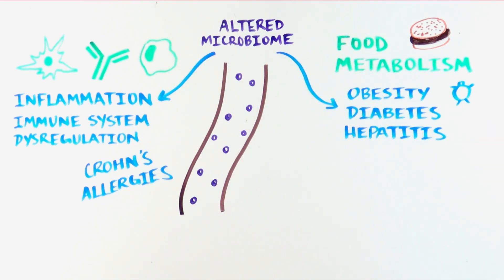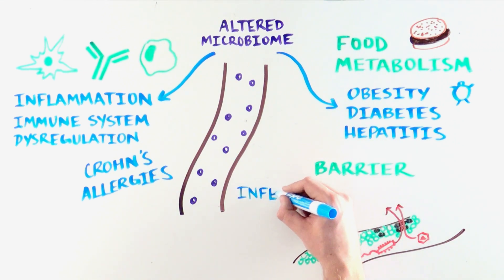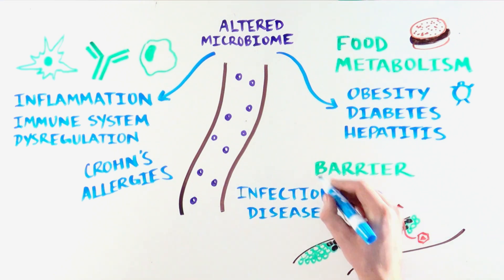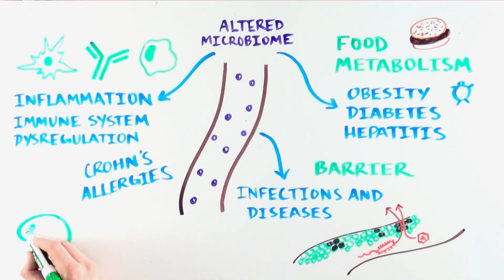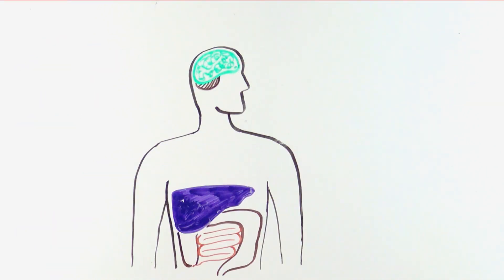Because these microbes act as a barrier to harmful pathogens, persistent damage to the community can be linked to the development of some infectious or hospital-acquired diseases. Finally, changes in the gut microbiome are also believed to influence chemistry in the brain and contribute to CNS diseases like depression or Parkinson's disease.